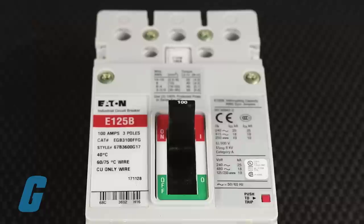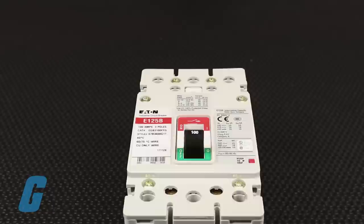Installing an E-Series handle on an Eaton EG Series circuit breaker is simple. To begin, make sure that both devices are set to the off position.